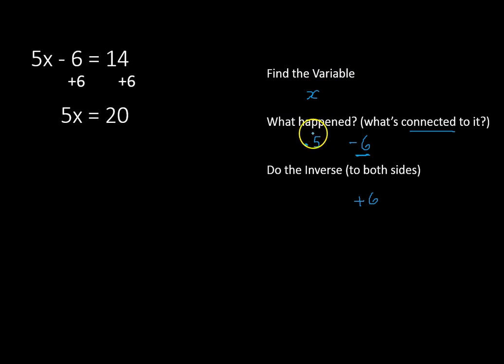What's our variable? X. What's happening to it now? It's being multiplied times 5, so now we're going to divide both sides by 5 to get our variable by itself on the left, and our solution of 4, x is equal to 4, on the right side of the equation.